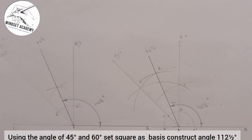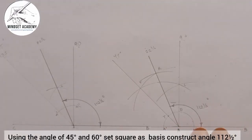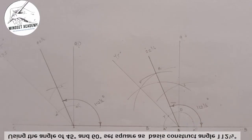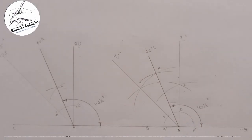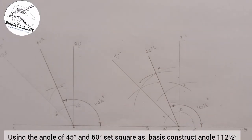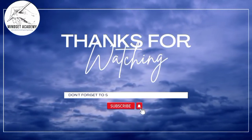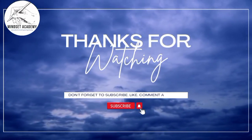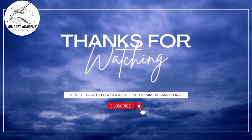This is how you can use your set square or compass to construct 112.5 degrees. If you found this video helpful, please don't forget to subscribe, like, and share the video. Thanks for watching.